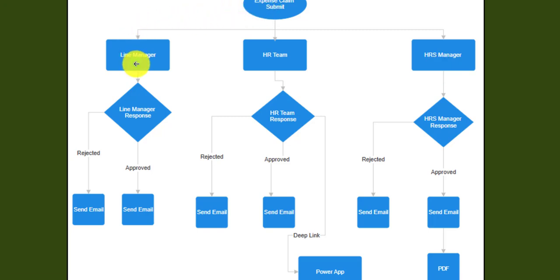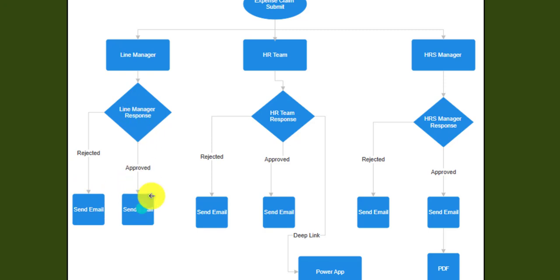Once the user submits, the request goes to the Line Manager who can approve or reject it. If approved, it goes to the HR Team. At each approval stage, the user gets an email notification about approval or rejection. The HR Team can also approve or reject. Additionally, the HR Team receives a deep link inside the email notification so they can navigate directly to the Power Apps edit screen.